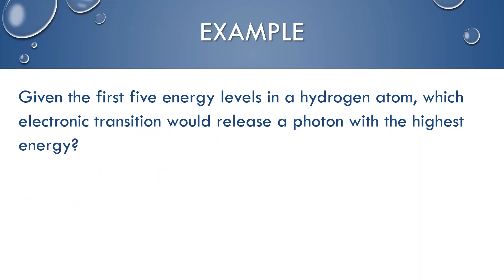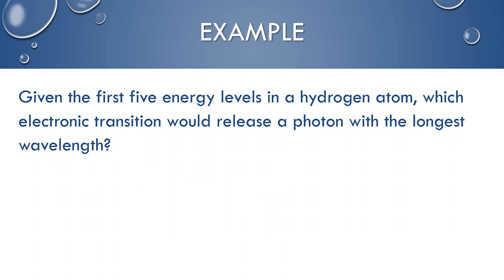Let's look at a couple of examples. Given the first five energy levels in a hydrogen atom: which electronic transition would release a photon with the highest energy? The highest energy would be from the fifth energy level all the way down to the first energy level — N equals 5 to N equals 1. That's the largest gap, so it will release a photon with the highest energy. Now, which transition would release a photon with the longest wavelength? Longest wavelength means the lowest energy. Because of the convergence limit, the smallest gap is from the fifth energy level down to the fourth energy level — just one level difference, and the difference between higher levels is smaller.